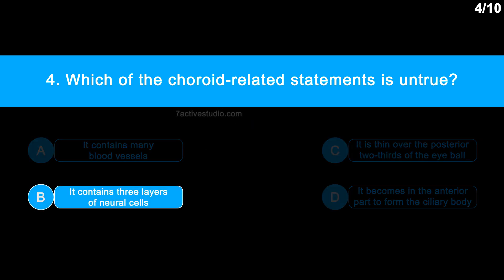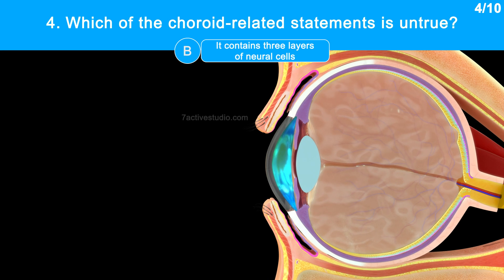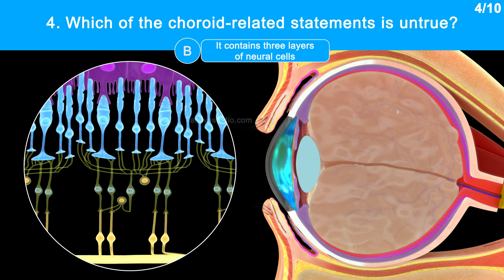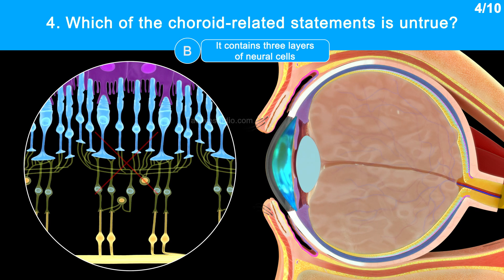The correct answer is option B: it contains three layers of neural cells. The inner layer, called retina, is the one with three layers of neural cells, but not the choroid.